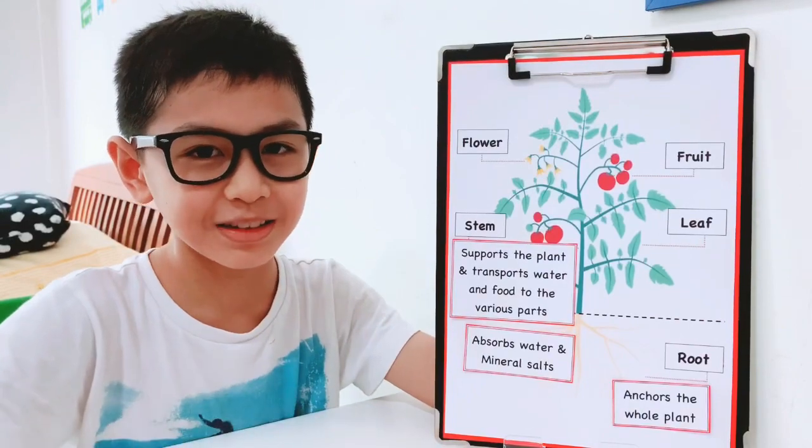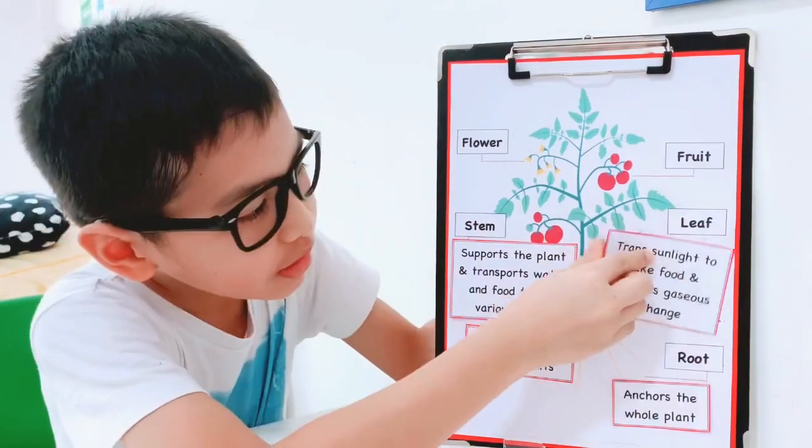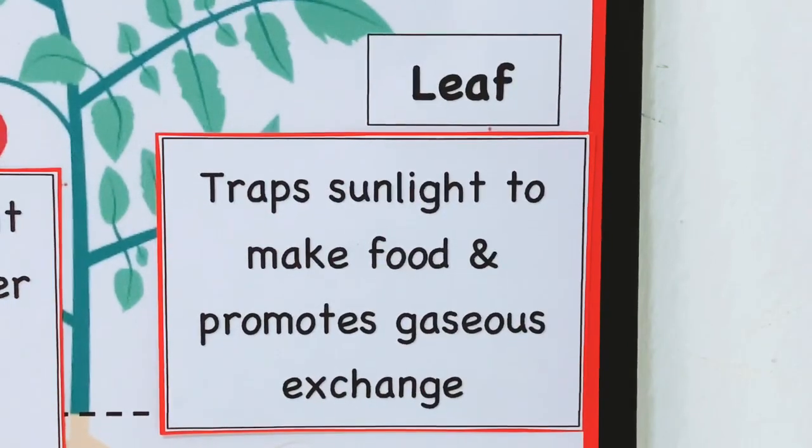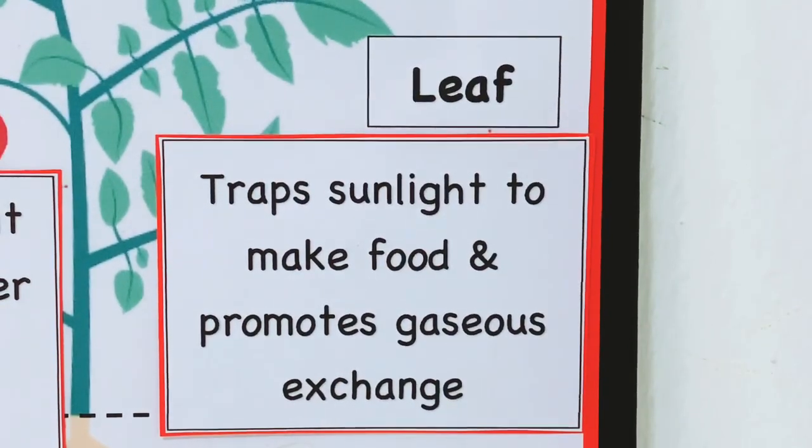Next, let us look at the function of the leaf. The leaf traps sunlight to make food and promotes gaseous exchange.